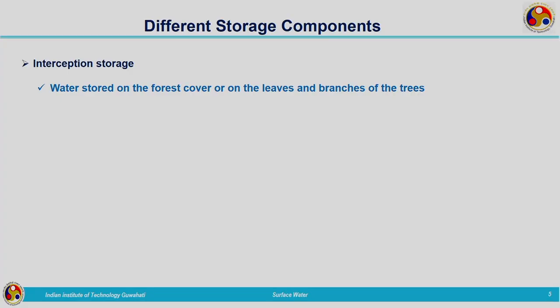Now let us see different storage components commonly talked about in hydrology. The first one is interception storage — storage in which water is stored on the forest cover or on the leaves and branches of trees. During rainfall, water falls onto the ground and some amount of this rainfall will be stored on the leaves and branches of trees and also the forest cover. This water may get evaporated back to the atmosphere without reaching the ground surface. The water stored on leaves or plant branches is termed as interception storage.